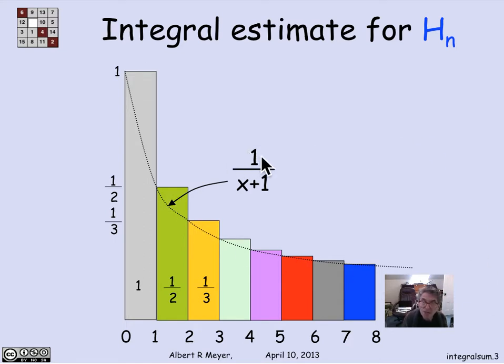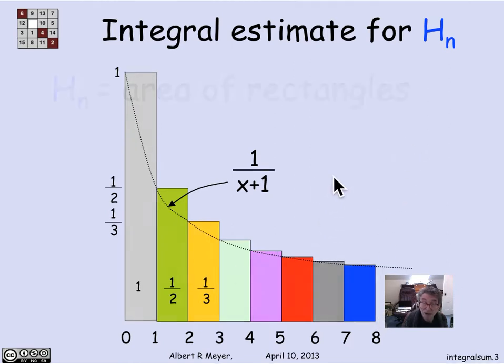So 1 over x plus 1 is a curve that is strictly below the boundaries of all these rectangles. That means that the area under 1 over x plus 1 going from 0 to n is a lower bound on H_n, because it's a lower bound on the area of the rectangles.